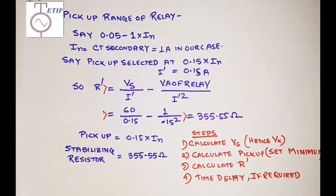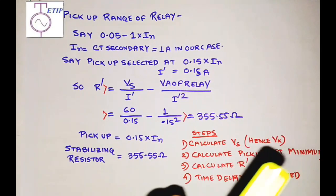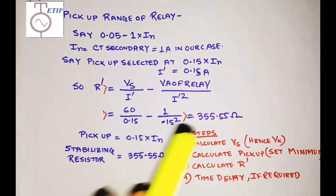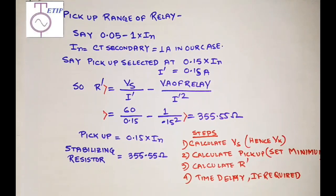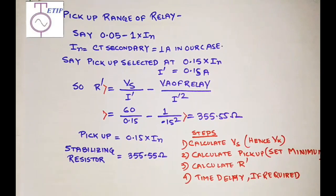In an upcoming video I will explain why the minimum pickup setting is very important — setting the relay at minimum ensures the maximum percentage of the protected winding is covered. These three videos — first the principle, second the CT ratio selection, and third this one — clear all the fundamentals of restricted earth fault protection. If you enjoyed this video, please like, share with your friends, comment, and don't forget to subscribe and hit the bell icon for the latest notifications. Thank you very much, see you in the next video.